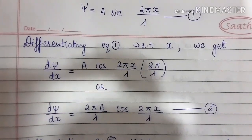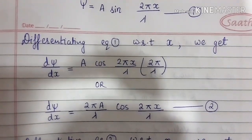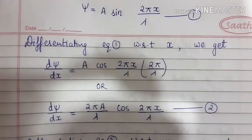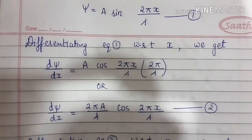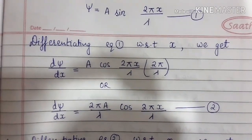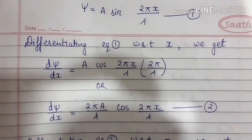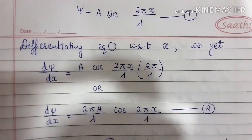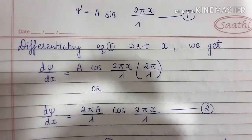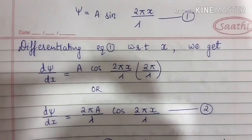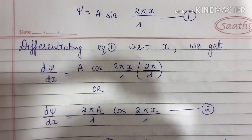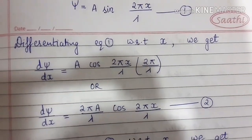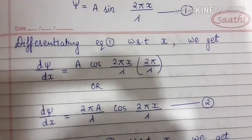We get this equation by differentiating equation 1 with respect to x, where x is the displacement in the x direction only. We do not consider the y direction or z direction here — we only consider the x direction.